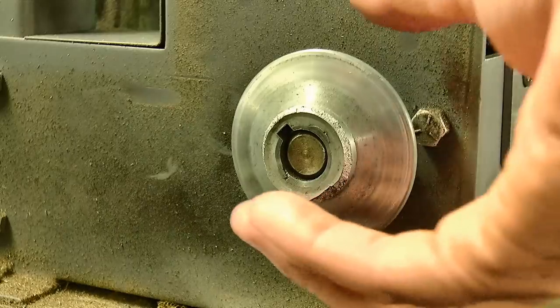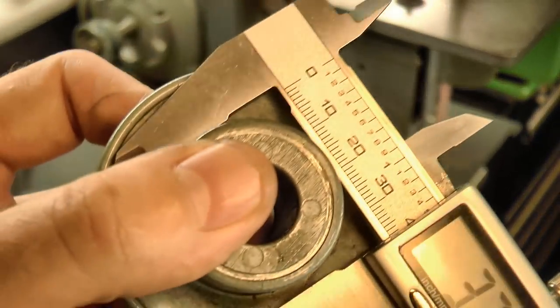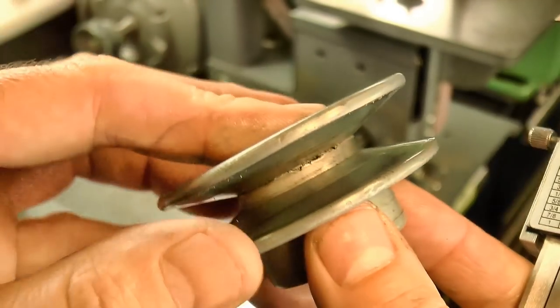Now the broken pulley appears to be a zamak or pot metal casting. It's an original part, so it's had a fairly long service life, and I've got no complaints about it letting go.